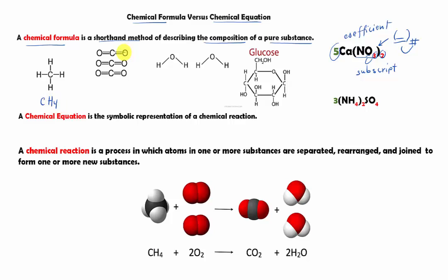In this example, we have three carbon dioxide — each of the substances is made of one carbon and two oxygen, so we have three of CO2. Then in this example, we have two water, and each water is made of two hydrogen and oxygen, so two H2O.